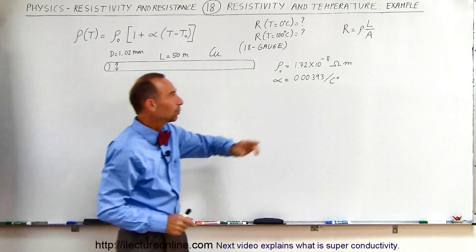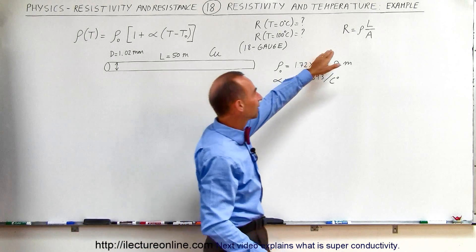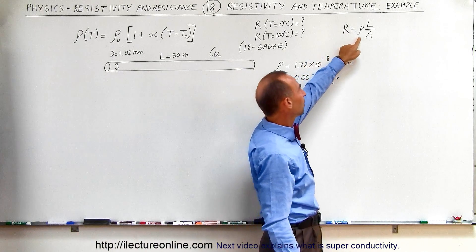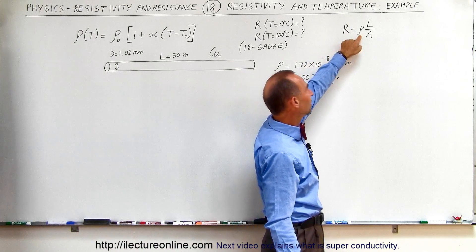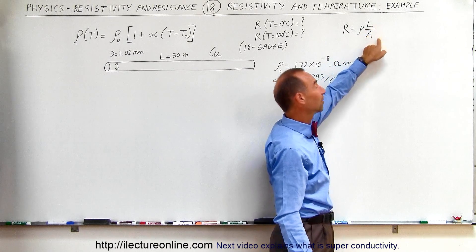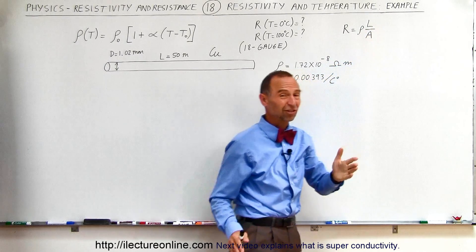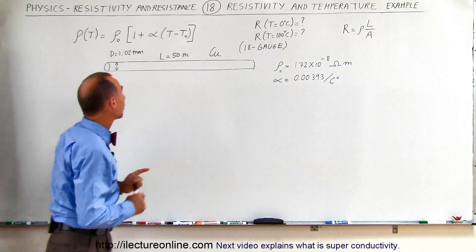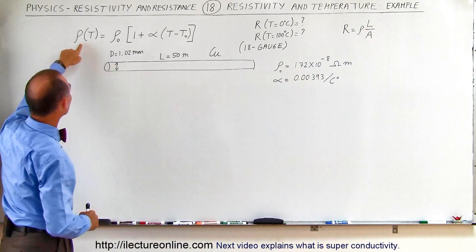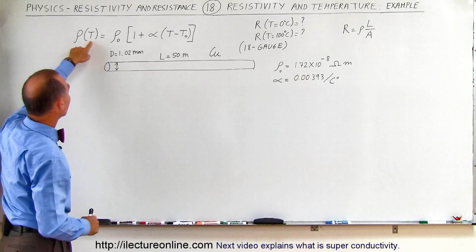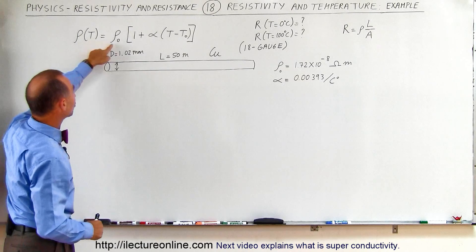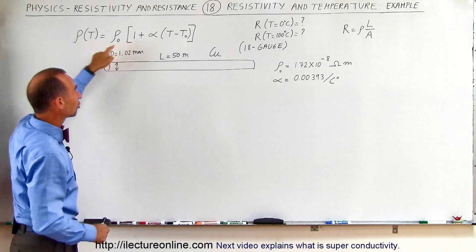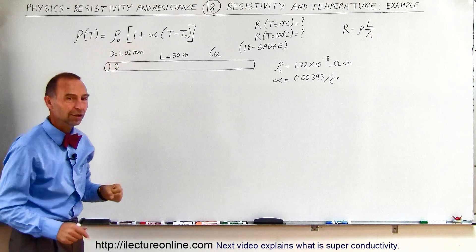We know that resistance can be calculated by multiplying the resistivity times the length of the wire and dividing by the cross-sectional area. We also know that the resistivity as a function of temperature changes according to the temperature equation.